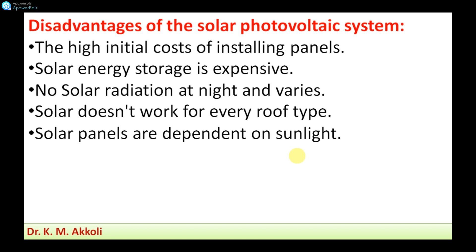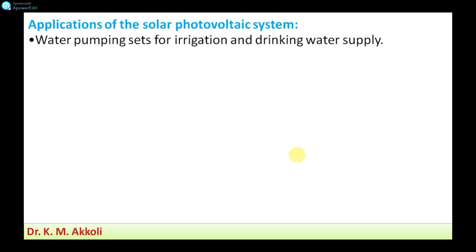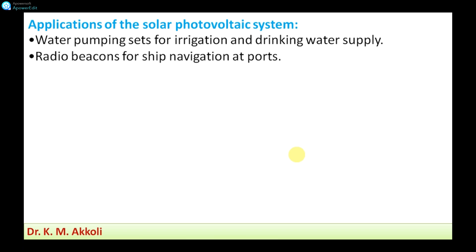The applications of solar photovoltaic systems are as follows. First, they can be used for water pumping sets for irrigation and drinking water supply — for agriculture and domestic water supply. Second, they are used for radio beacons for ships and navigation at ports, where signals sent to ships for navigation are powered by the solar photovoltaic system.